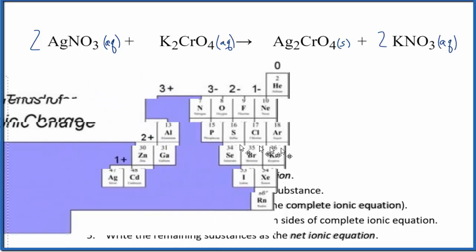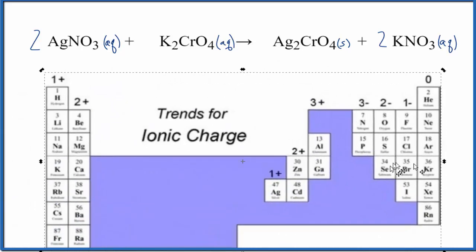Let's take a look at the periodic table here and we can see that silver, it's a transition metal. It's kind of special. It's always 1+. So that's the charge on silver. The nitrate, we don't see here. We could look that up on a table of common polyatomic ions. It's probably one you should memorize as well. It's 1-.